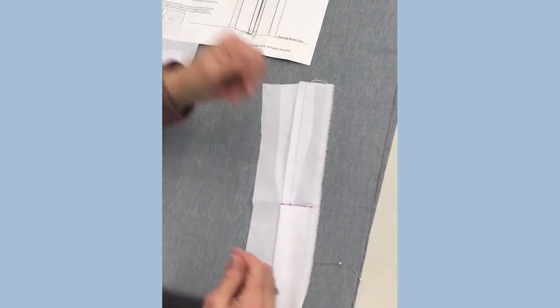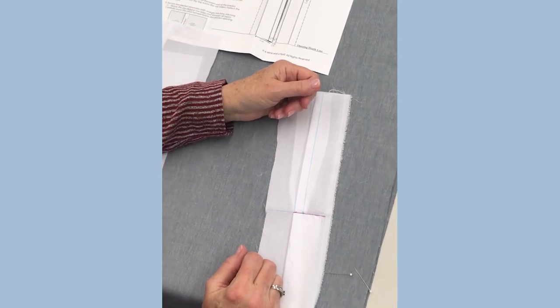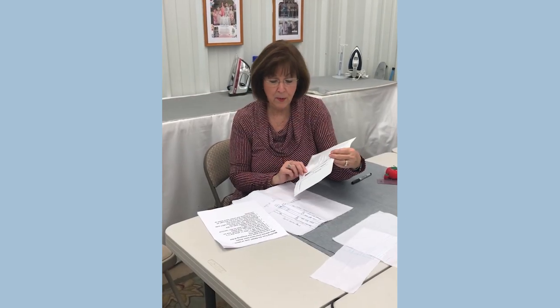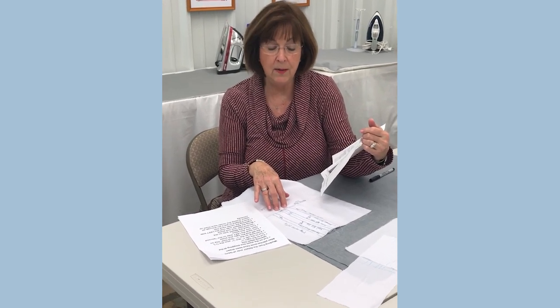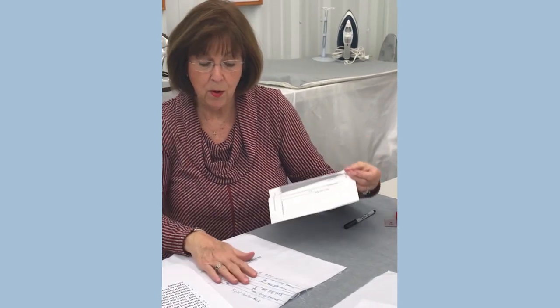I think that probably the common mistake that people make when they try to do this and they think it's hard to do is they maybe don't notice up here that it says front side of fabric. You work from the front until you get everything folded and turned.